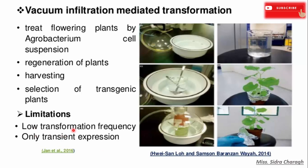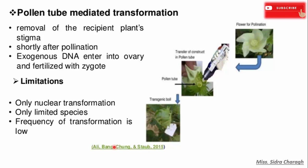The next method is pollen tube mediated transformation. In the pollen tube pathway method, the pollen tube is used to introduce plasmid DNA containing an exogenous gene into the embryo sac, leading to the transformation of the fertilized egg. Every embryonic cell results in the regeneration of a transgenic plant. Its limitations are that only nuclear transformation occurs, it is limited to a few species, and the frequency of transformation is very low.